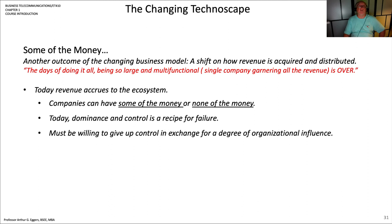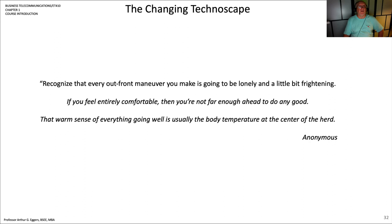Another outcome of the changing business model is a shift in how revenue is acquired and distributed. The days of doing it all — being so large and multifunctional — are over. Today, revenue accrues within the ecosystem; companies can have some of the money or none of it. The dominance of control becomes a recipe for failure. It's very easy to be pushed out. You must be willing to give up control in exchange for a degree of organizational influence, and you must recognize that every out-front maneuver you make is going to be lonely and a little frightening. If you feel entirely comfortable, you're not far enough ahead to do any good — you have to get outside of your comfort zone and take a little risk.